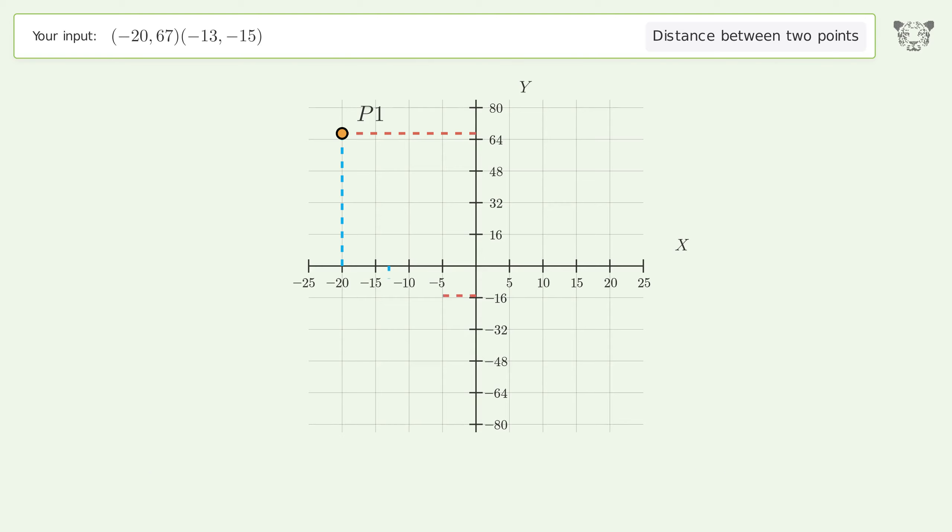The coordinates of Point 2 are x2 equals negative 13 and y2 equals negative 15. d is the distance between the two points.